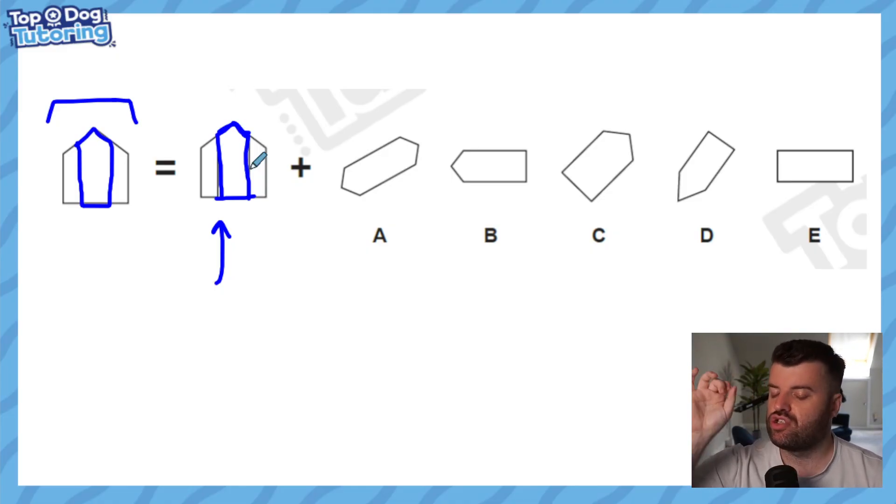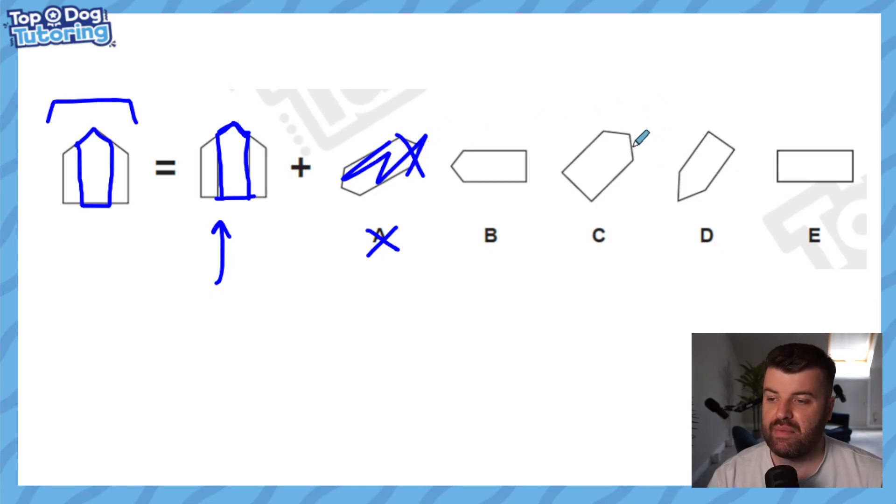Now this is where we have to be so precise because again we can get rid of A because we know one side has to be flat so that would be wrong, and we can also get rid of E because neither side has a point so that's wrong. But the remaining shapes all are roughly the same and this is where we need to really focus on the angles inside of the shape and the length of the lines of the shape.